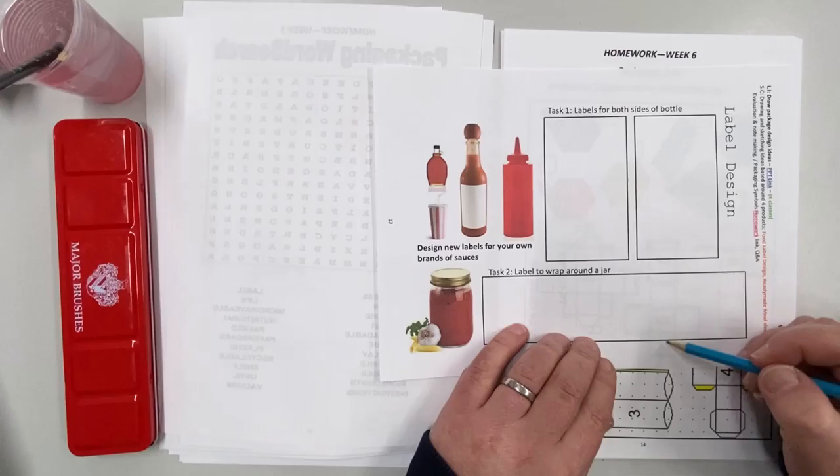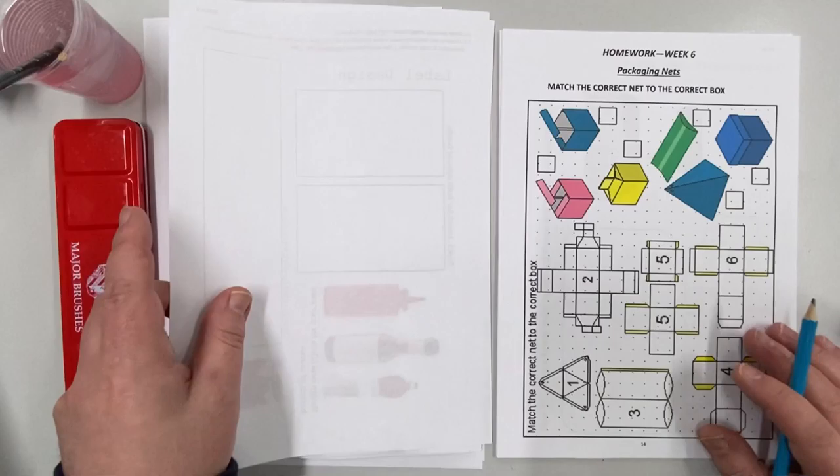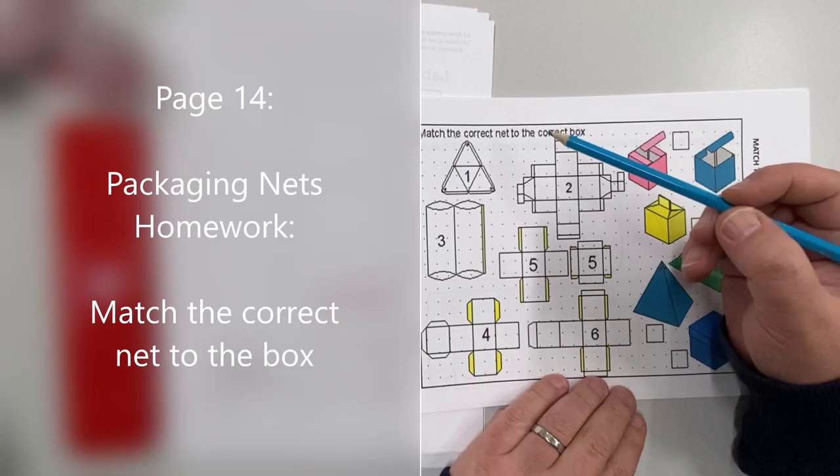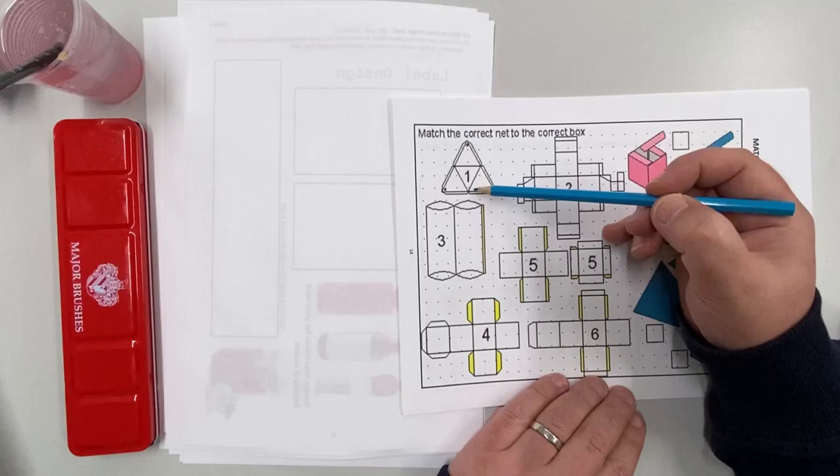And then if we look at the homework which is packaging nets, you may have done these in class before. So what you have to do is you have to match the correct net to the correct box. So these nets are basically the boxes that have been unfolded.